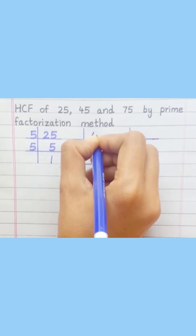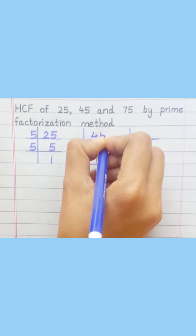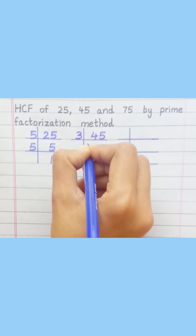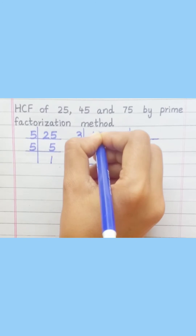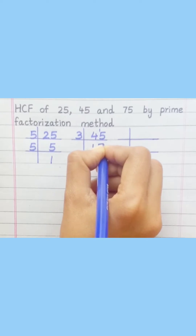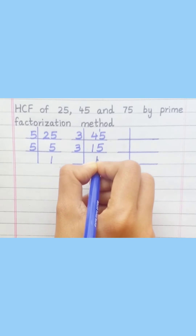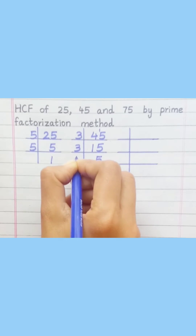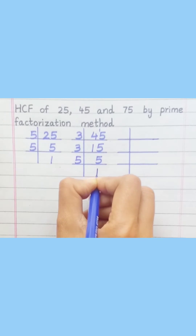45: 3 ones are 3, 3 fives are 15, 3 fives are 15, 5 ones are 5.